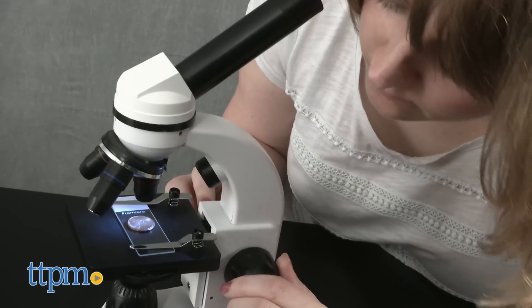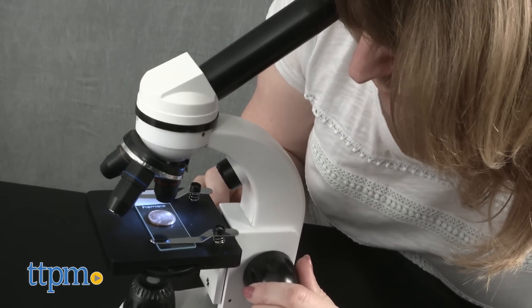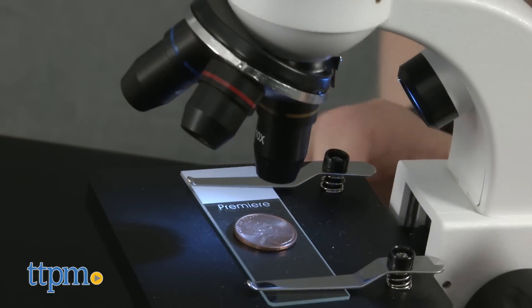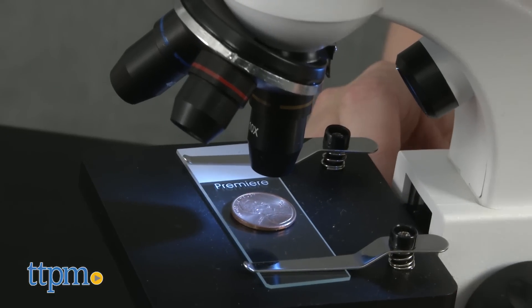This gives young scientists ages 9 and up the same features of a professional microscope, but in a size that's right for them. Because it runs on batteries, you don't have to plug it in anywhere, making it great for kids to take with them when they're out in the field.